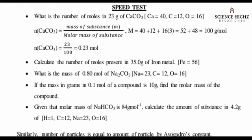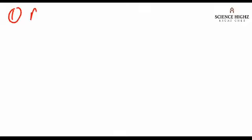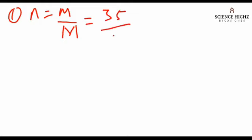Calculate the number of moles present in 35 grams of iron metal. The relative atomic mass of iron is 56. So n equals m over capital M. We put the numbers in: 35 grams all over 56 grams per mole. The grams cancel each other, leaving us with 0.625 mole.